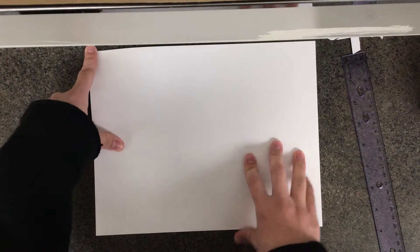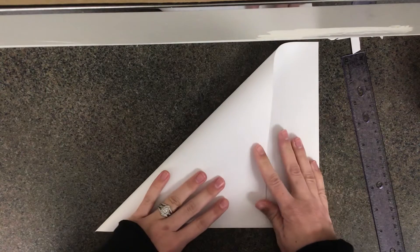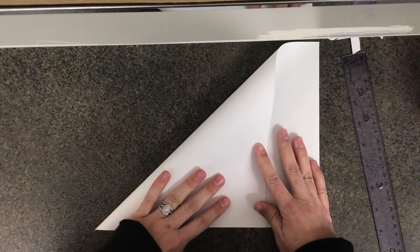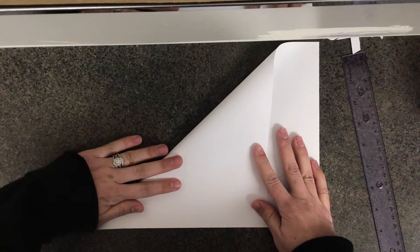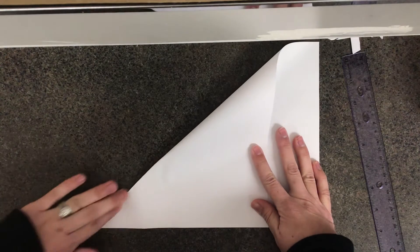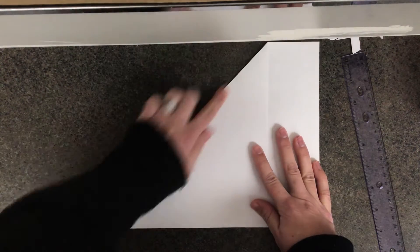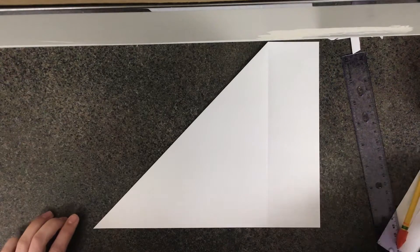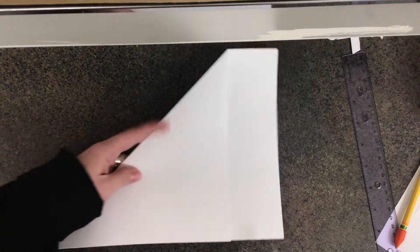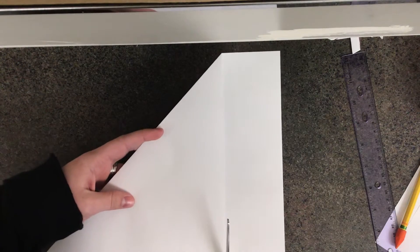Take the top left corner, fold it down to the bottom like this, make sure the edges line up, and then crease it down. Then you can grab a pair of scissors and cut off the rectangle on the end, and you'll have a square piece of paper.